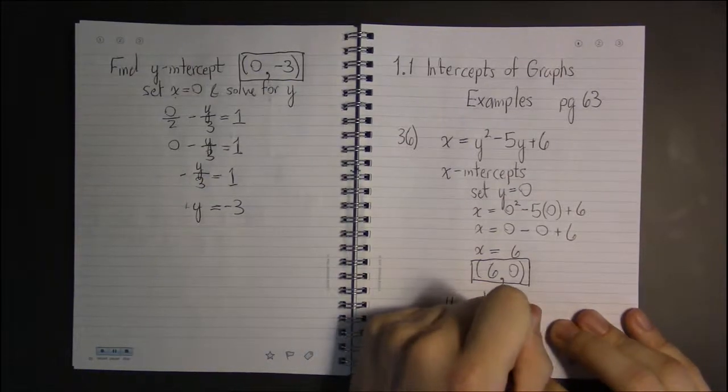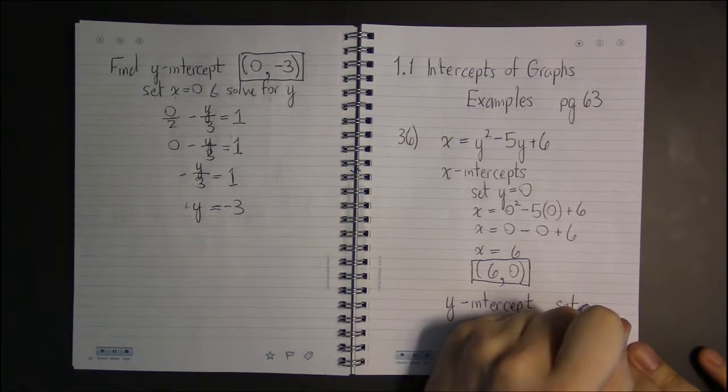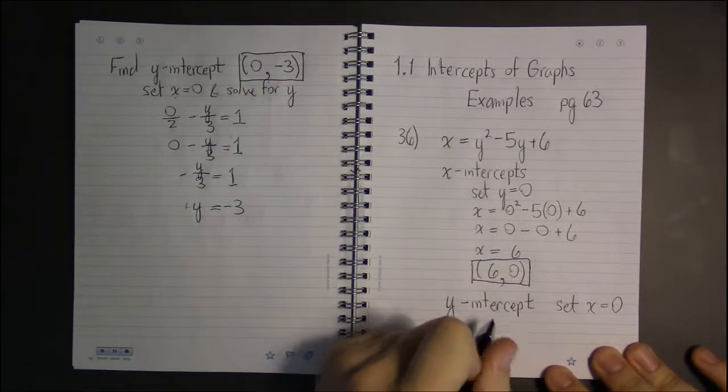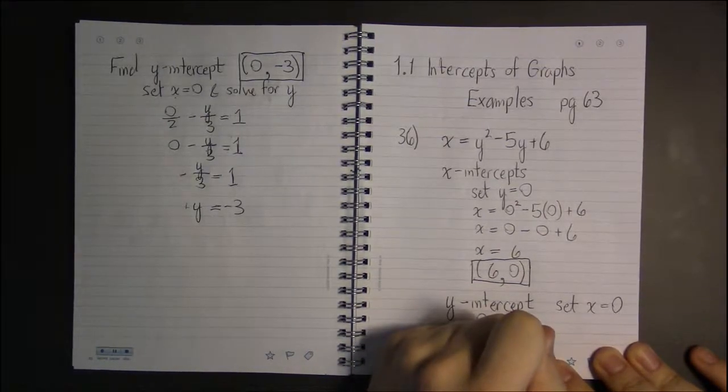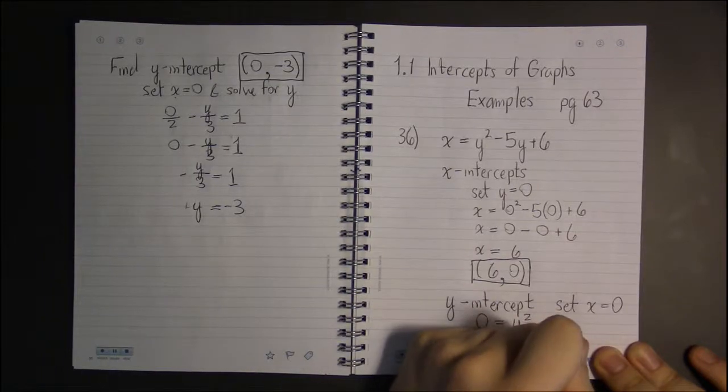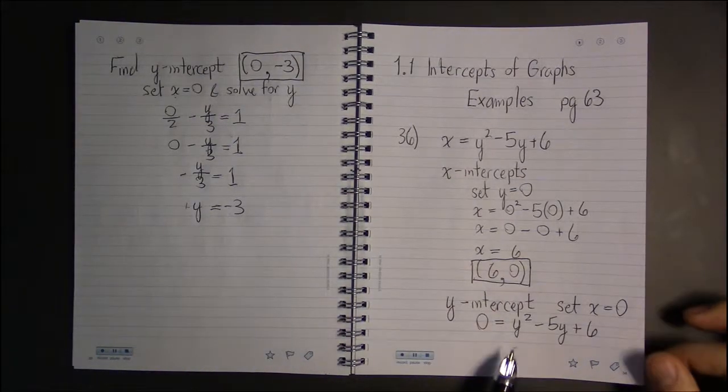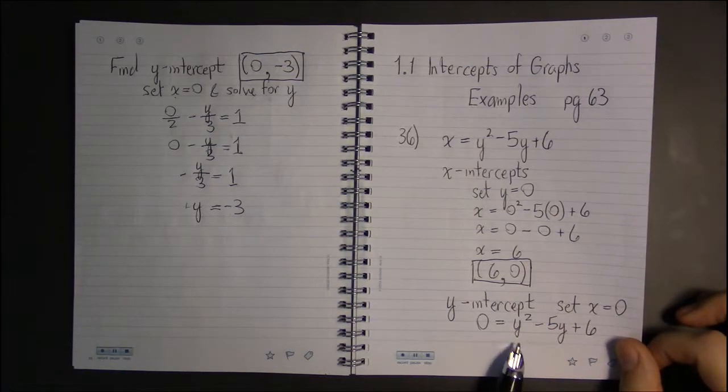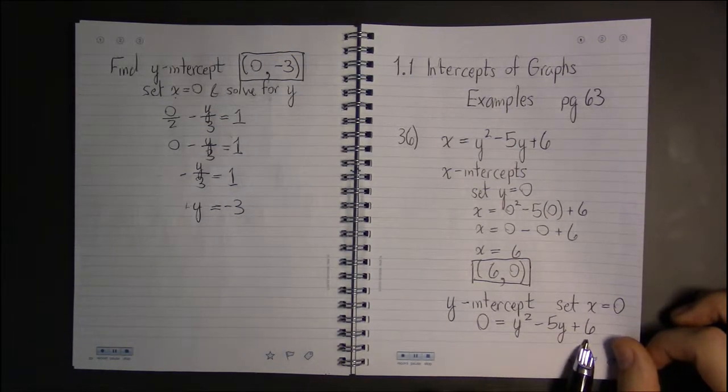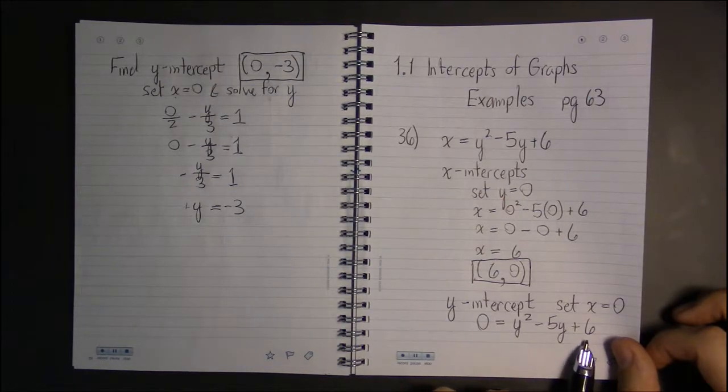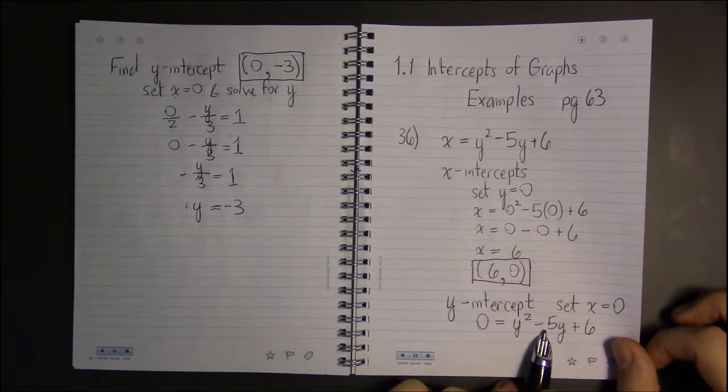For the y-intercept, we're going to set the other variable, x equal to 0. So setting x equal to 0, the remaining equation is 0 equals y squared minus 5y plus 6. We haven't quite got into how to solve quadratics quite yet, but some of you may already be familiar with this, that we're going to need to factor this equation in such a way that we're going to need two numbers that multiply to a plus 6 and add to a minus 5.